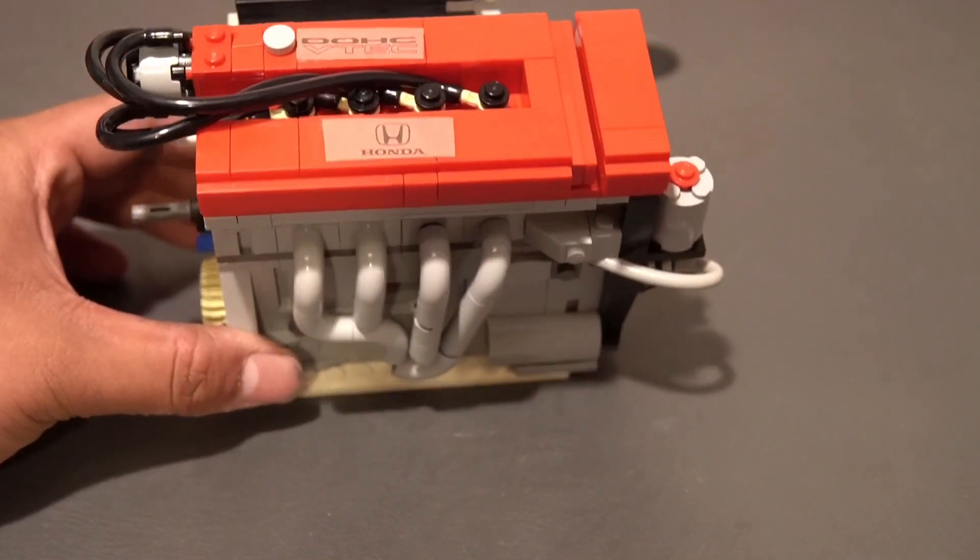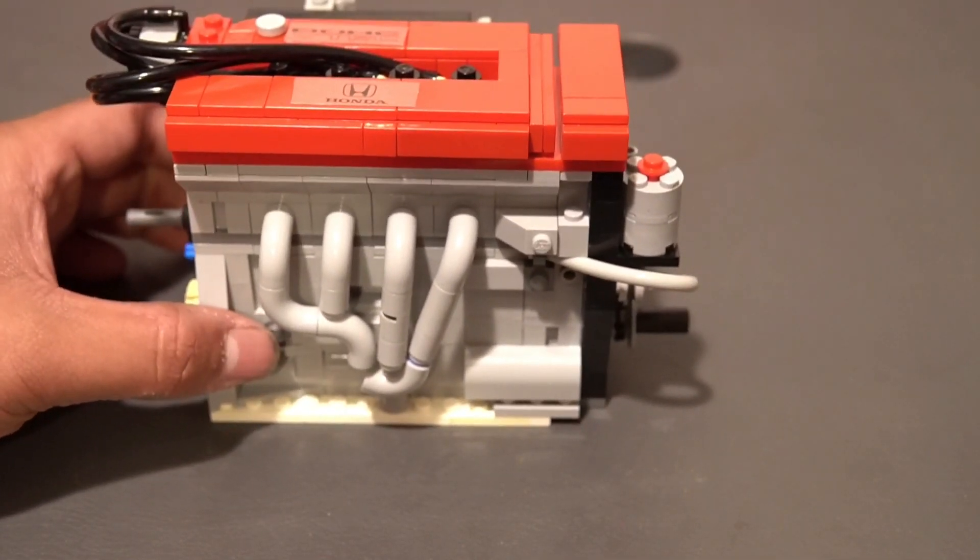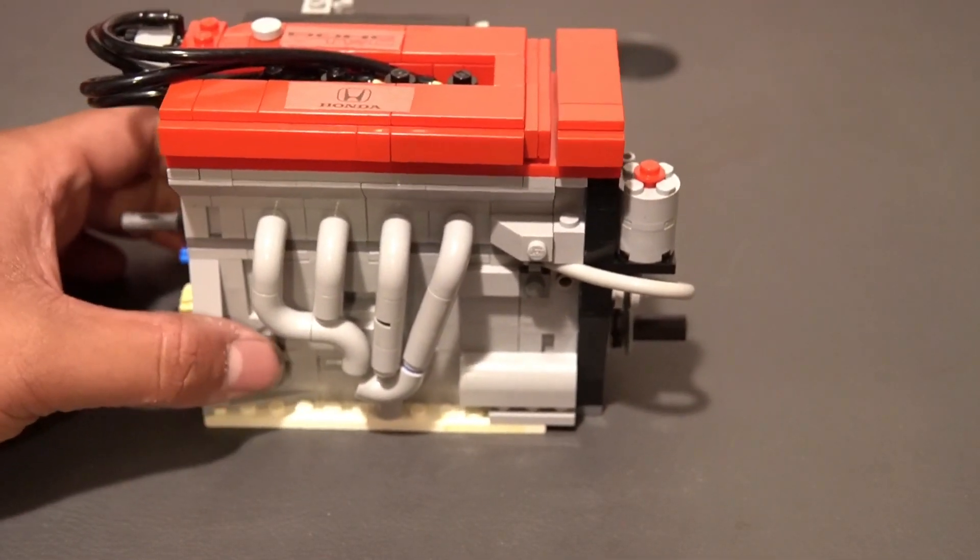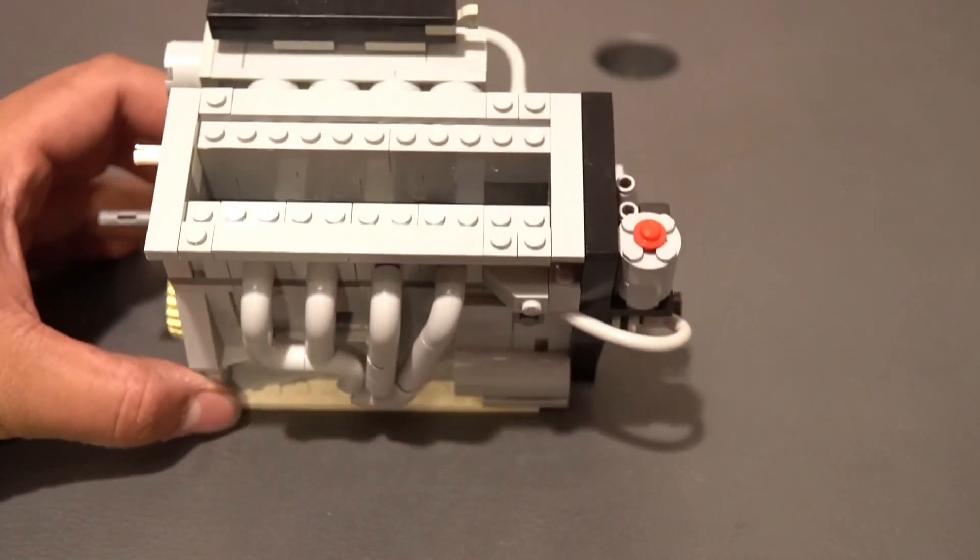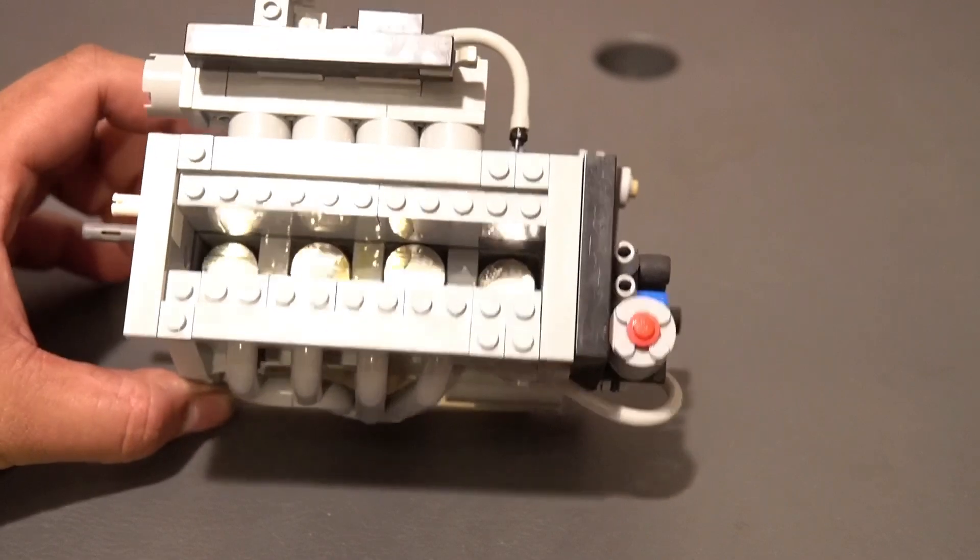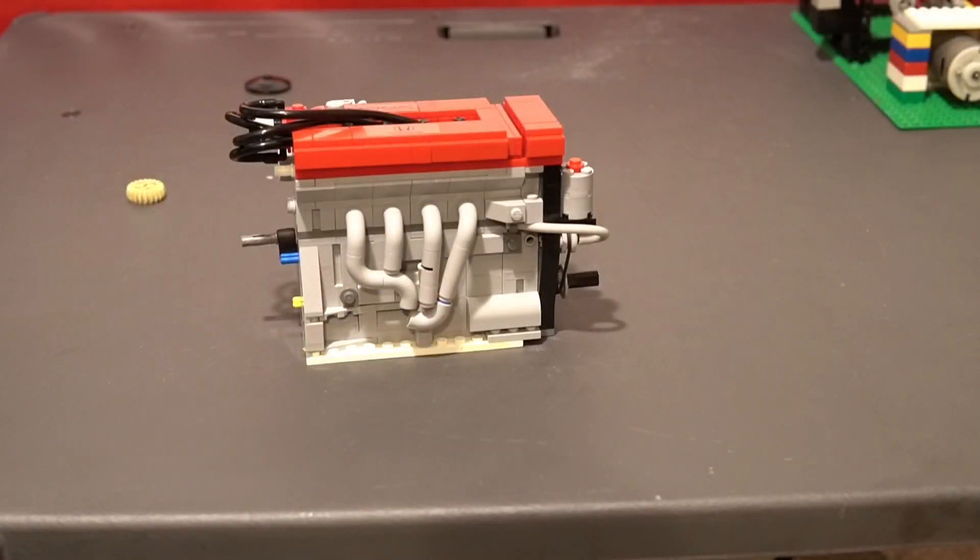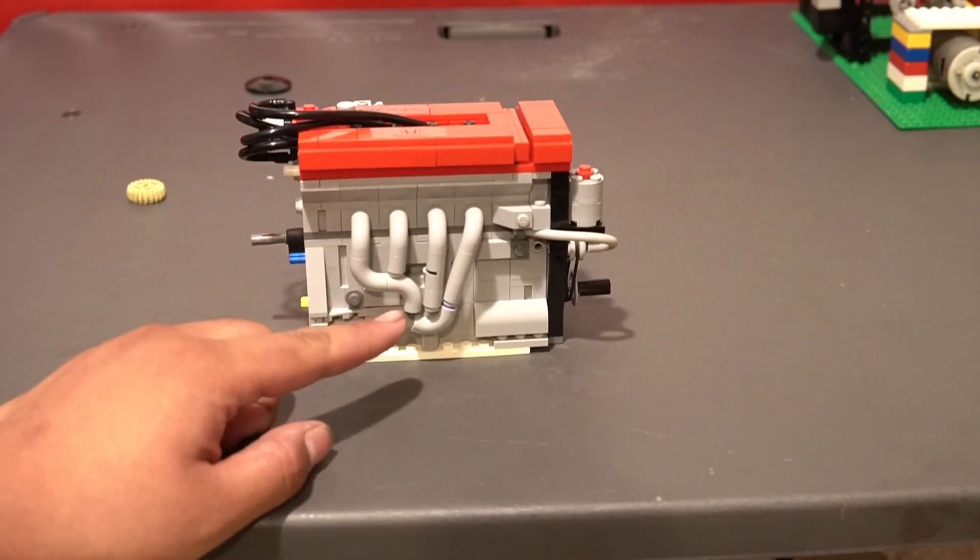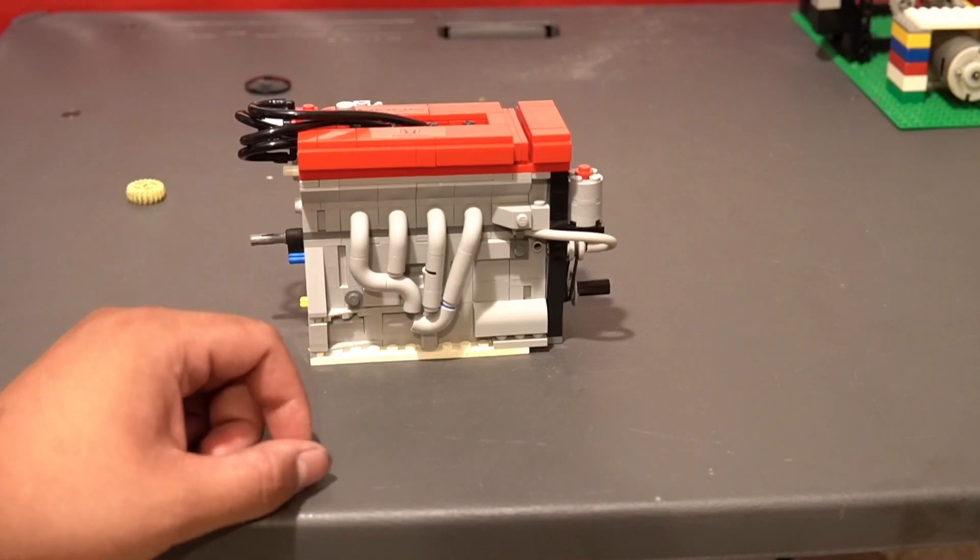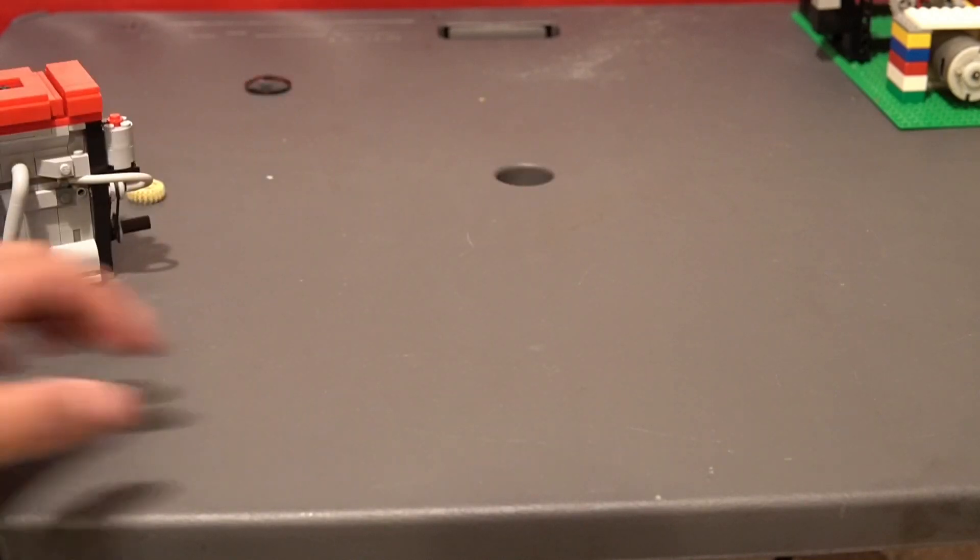The features that come with this engine are actual moving pistons, so the valve cover can separate. Although there is no valve train and head, there is still moving pistons. I'm pretty much very well pleased with how the model came out and even the exhaust manifold is pretty much accurate. But I thought to myself, why stop there? Why not make the whole engine bay? So that's what I did.